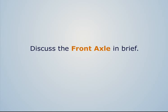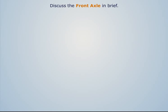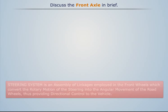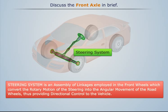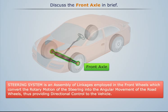We know that the steering system is an assembly of linkages employed in the front wheels which convert the rotary motion of the steering into the angular movement of the road wheels, thus providing directional control to the vehicle. Now before discussing the steering system, let's first discuss the front axle in brief.